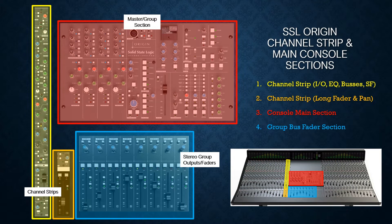In this slide you can see all of the sections of the console laid out in colors. First in yellow we have the channel strip, which includes your IO, EQ, buses, and short faders. Down in the orange section you'll see the continuation of the channel strip, which is the long faders and their pans. In the console main section shown in red you can see how the AUXs and the group inputs are tied into the main stereo group outputs in blue, and you can see where each of those things shows up on the console.